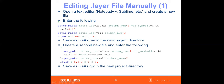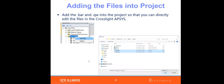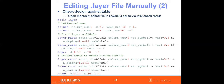You can add the .bar and .qw files into your project to edit them directly in CrossLight. The .layer file is very similar to the 1D simulation, except now you have two columns, so you need to specify the material for the second column as well. For the first layer, both columns have the same material and doping. But in the second layer, the second column has a much higher N-doping concentration — increased by four orders of magnitude.